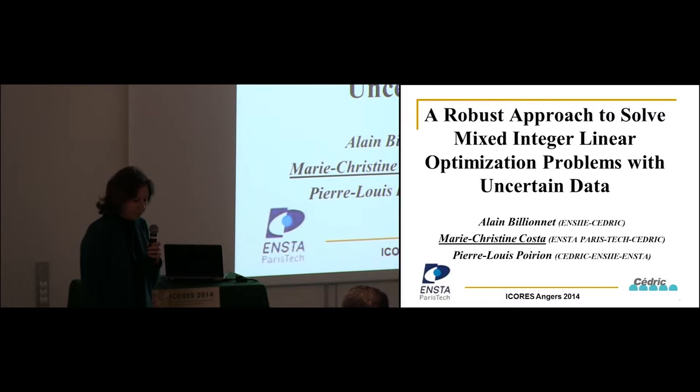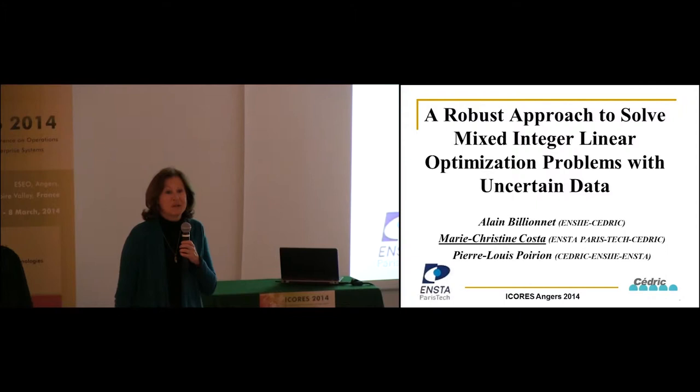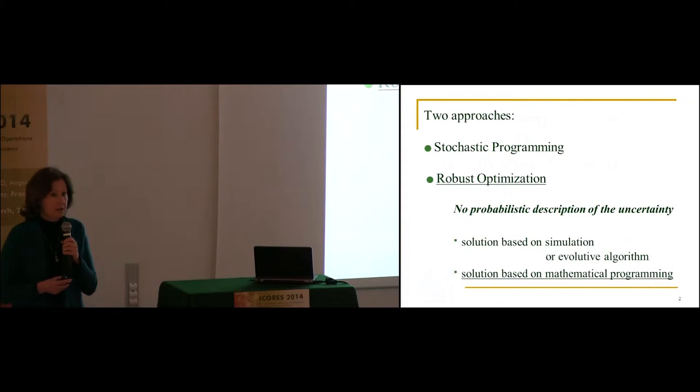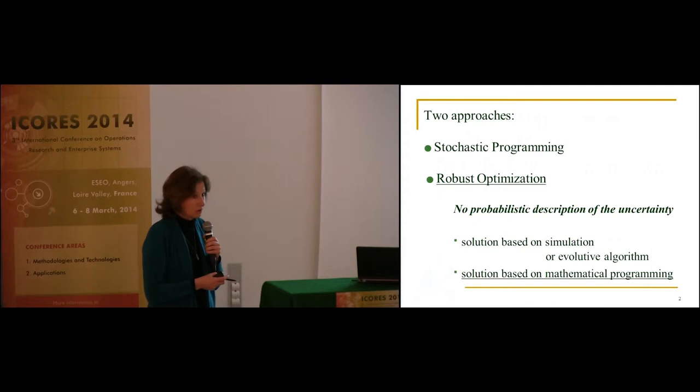In fact, I had planned for Jean-Philippe Vial to present the basics on robust optimization, but unfortunately he was not able to come, so I have added something in my talk and I hope it will be clear. There are two approaches to solve problems where there is uncertainty on the data. The first, well known for a long time, is stochastic programming, and the second, more recent, is robust optimization.